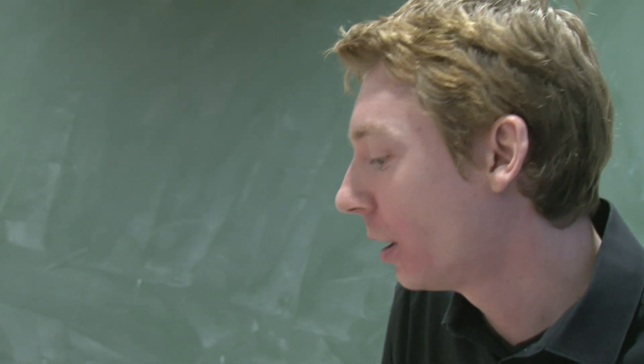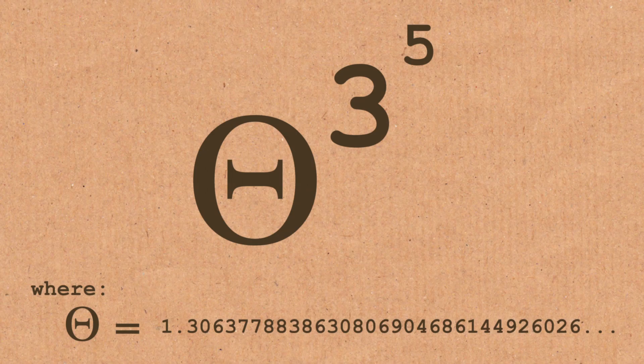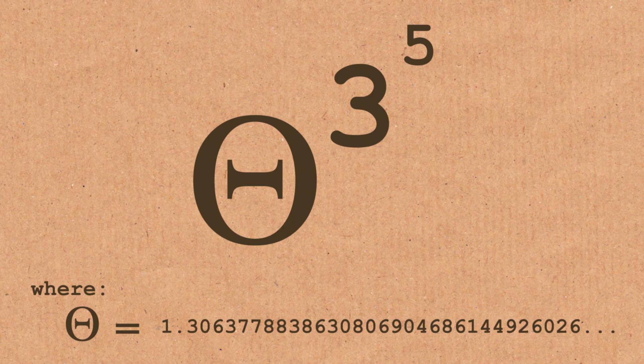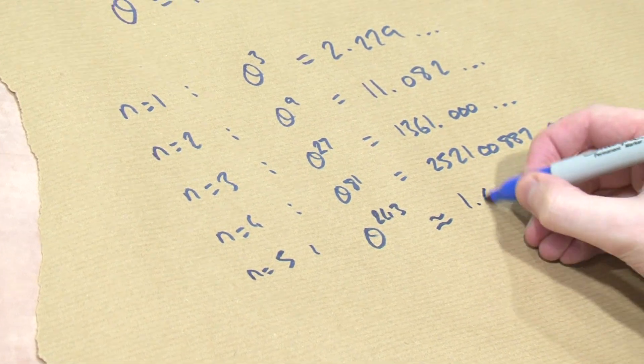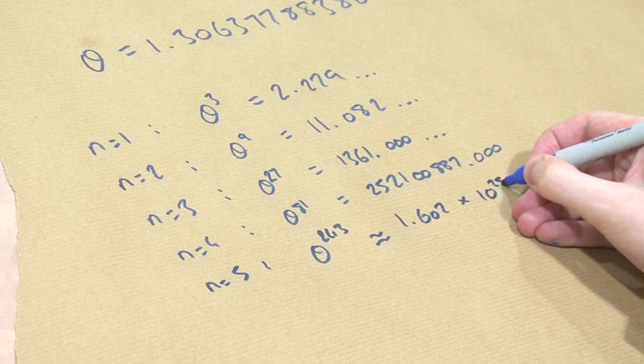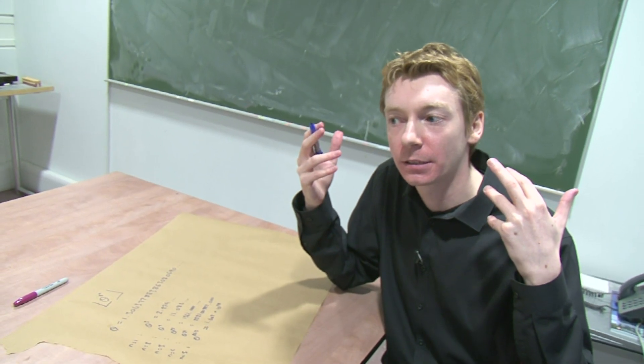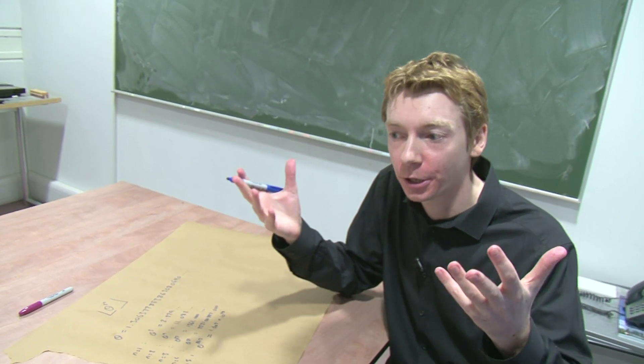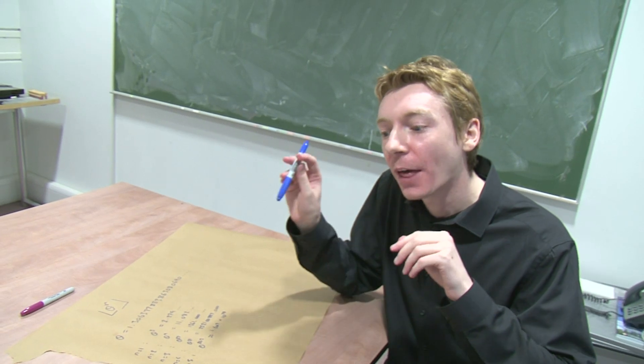So the next one, n equals 5, is theta to the power 243. And this is about 1.602 times 10 to the 28. Once you start getting bigger than that, you can't do it. The computers can't cope with that.